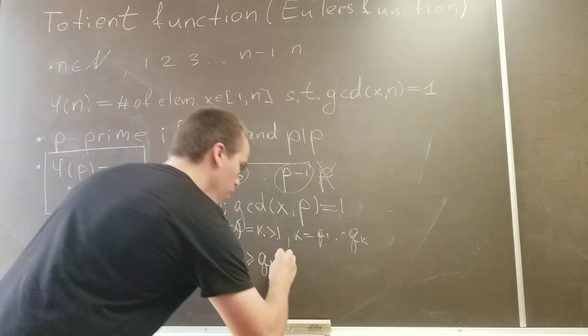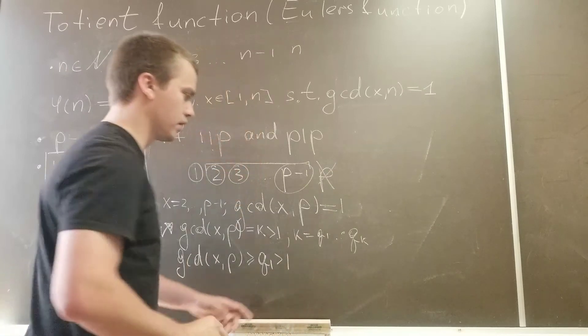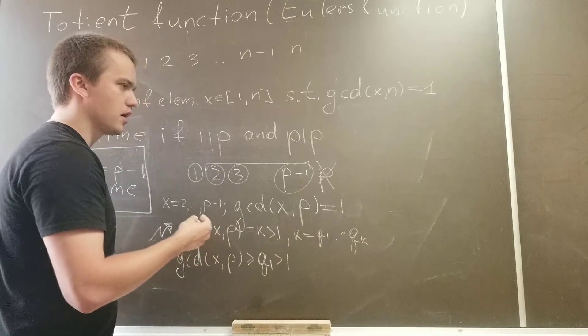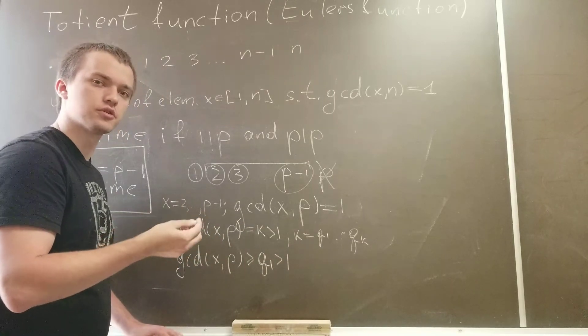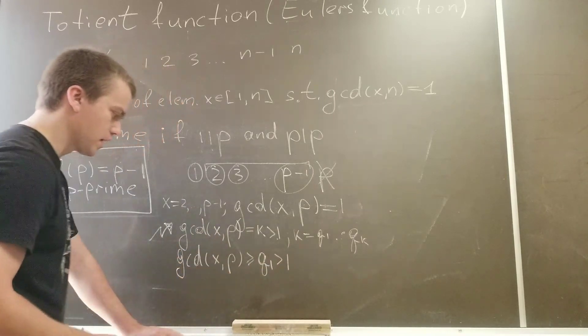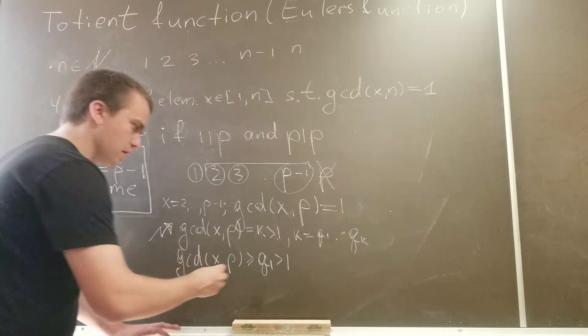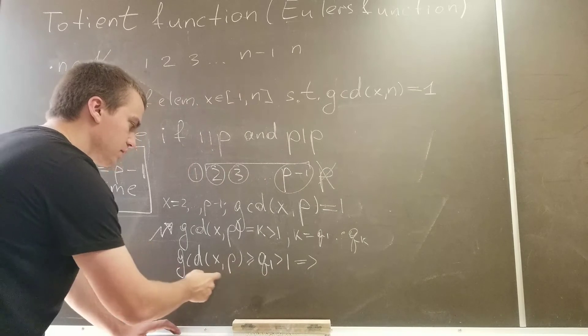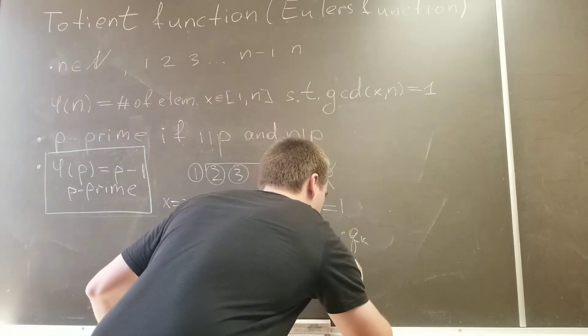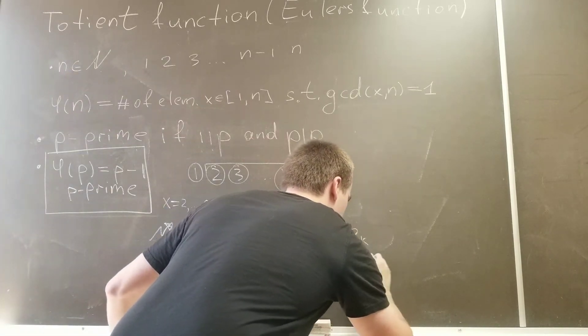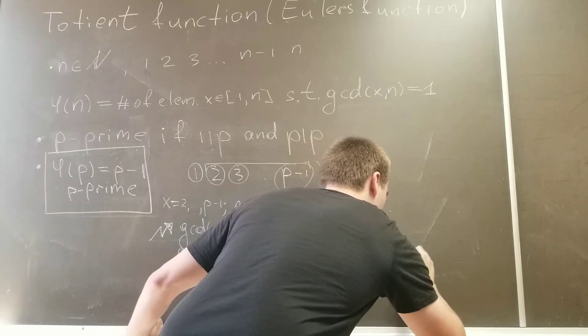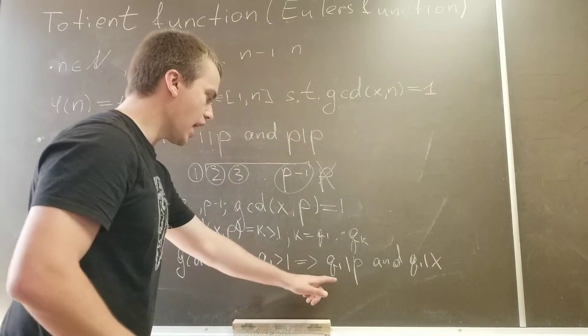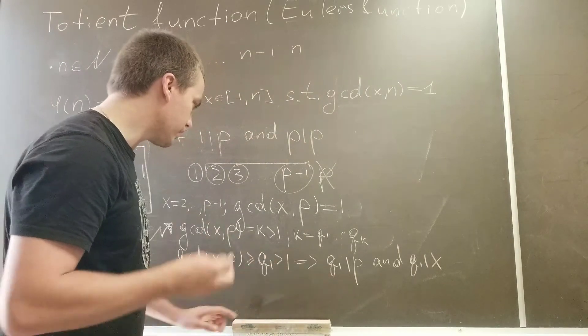And what we know about q1? The q1 is bigger than 1. Why? Because the definition of prime numbers, prime numbers must be bigger or equal than 2, so 1 is not a prime number. But from the definition of gcd, it means q1 divides p and q1 divides x. And we found, and what else can I say?